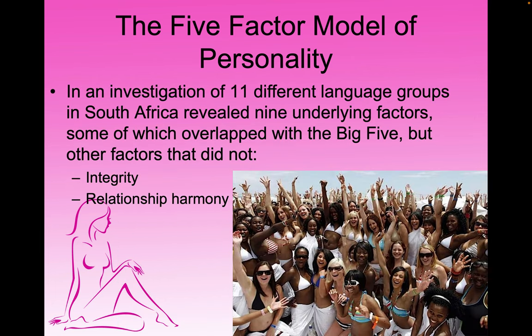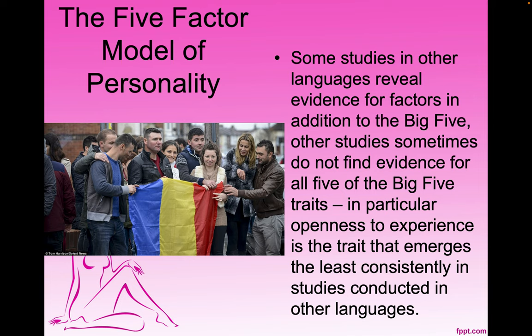In an investigation of 11 different language groups in South Africa, researchers revealed nine underlying factors, some of which overlap with the Big Five, but others did not — specifically integrity and relationship harmony. Some studies in other languages reveal evidence for factors in addition to the Big Five, while other studies sometimes do not find evidence for all five of the Big Five traits.